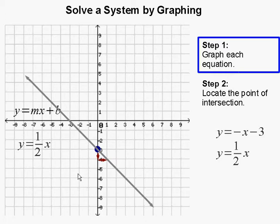Next, we are going to graph our other equation, which is y equals one-half x. Our y-intercept, which is b, is 0 since there's no number here. And m, the number in front of x, is our slope, which is one-half.